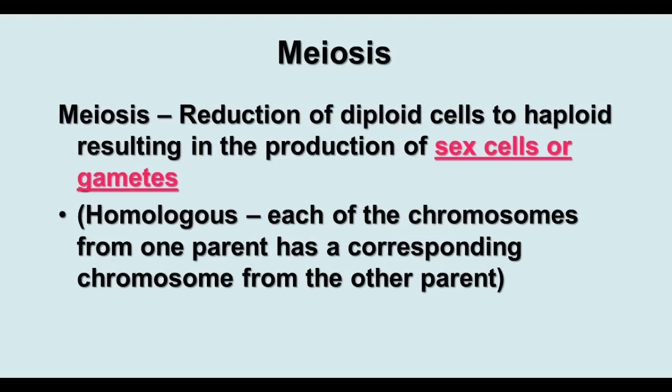Meiosis is the type of cell division that produces haploid cells. It involves the reduction of diploid cells to haploid, and that produces the sex cells or gametes. Each chromosome has a corresponding homologous chromosome from the other parent, and meiosis separates those homologous chromosomes into the gametes.